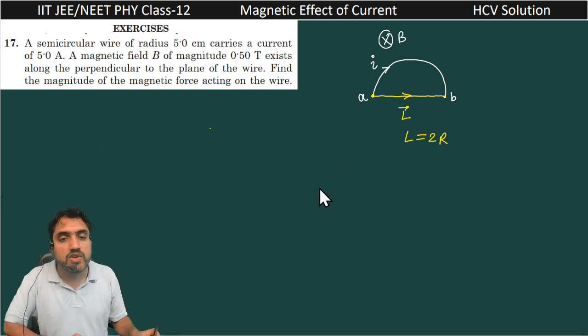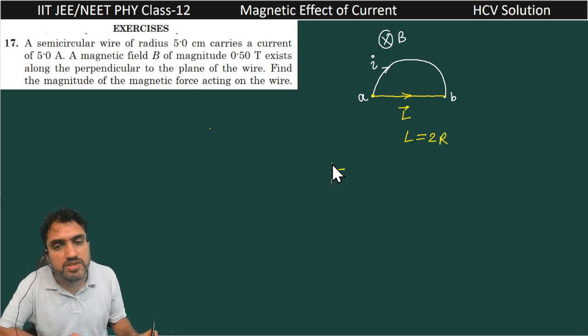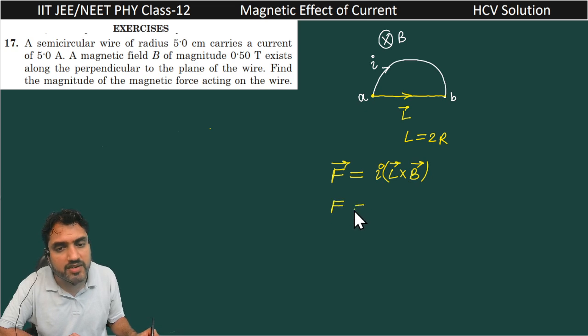So the force vector is equal to I L cross B. And if you are finding the magnitude of this F, what is the length? The magnitude of this effective length, or you can say the shortest length, is equal to 2R, that is the diameter.